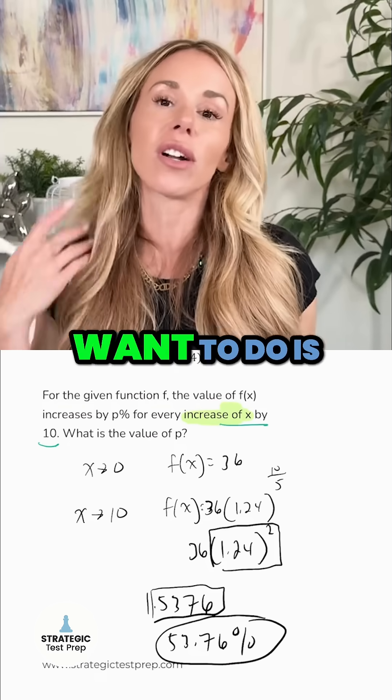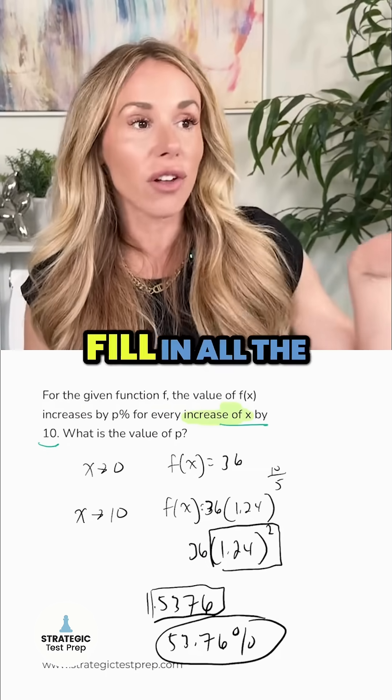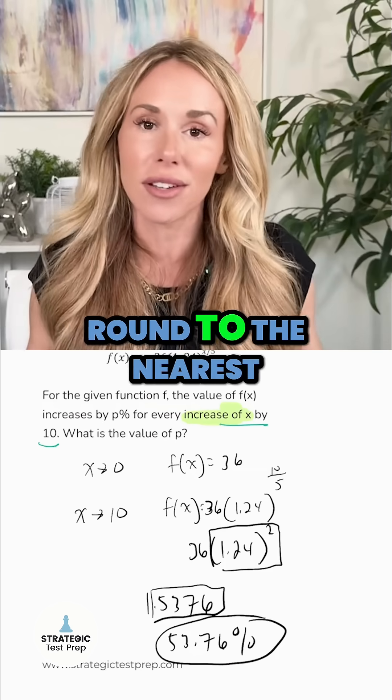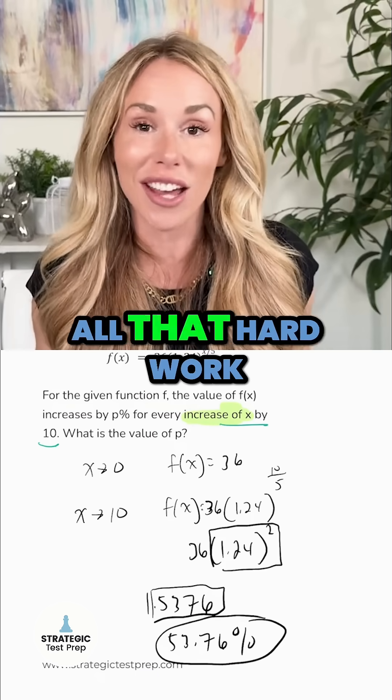If you end up having a longer decimal than five spaces, what you're going to want to do is round the last digit. But please do not round prematurely. Fill in all the spaces unless they say round to the nearest tenth or something. Otherwise they will mark it wrong and you will lose the point after all that hard work.